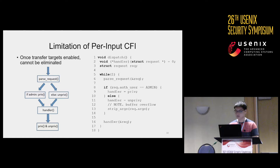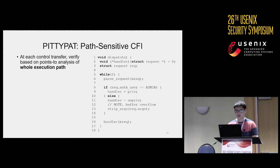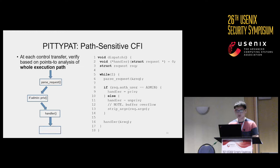In this work, we propose a mechanism called path-sensitive CFI, implemented as PITTY-PATH. At each control transfer, we verify based on the points-to analysis of the whole execution path. For the first loop, if the if-branch is taken, only the privileged function is valid. In the second loop, if the else-branch is taken, because the handler is rewritten by the unprivileged function, we consider only the unprivileged function as valid.